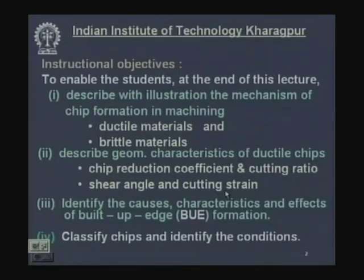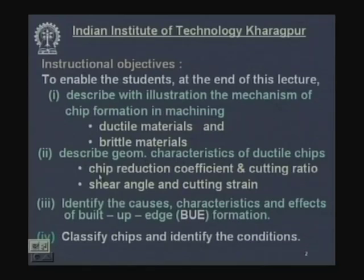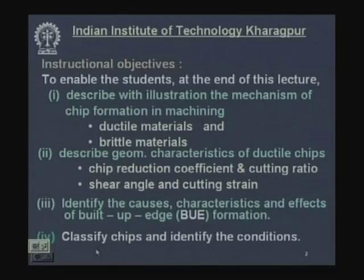The instructional objectives for today are: first, describe with illustration the mechanism of chip formation in machining ductile and brittle materials; second, describe geometrical characteristics of ductile chips — chip reduction coefficient, cutting ratio, shear angle, and cutting strain; third, identify the causes, characteristics, and effects of built-up edge (BUE) formation during machining; and fourth, classify chips and identify the conditions under which each type forms. There will also be quiz and numerical problems.